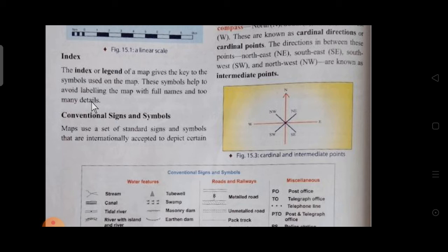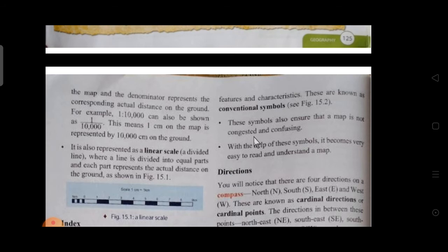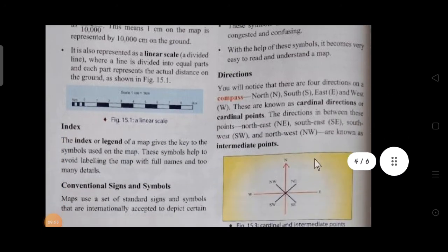The fourth component is conventional signs and symbols. Maps use a set of standard signs and symbols that are internationally accepted to depict certain features. These are known as conventional symbols. These symbols ensure that a map is not congested and confusing. With the help of these symbols it becomes very easy to read and understand the map.